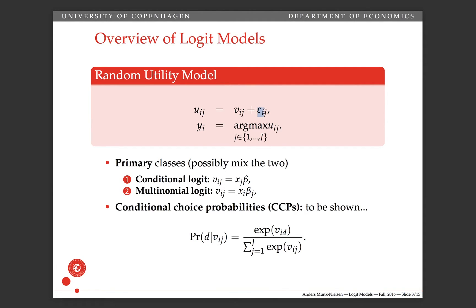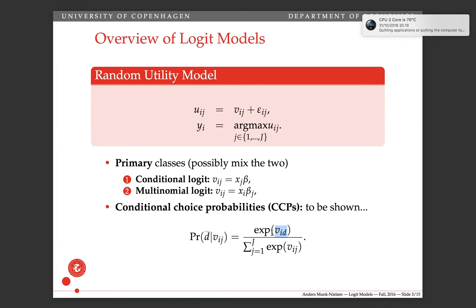When we assume epsilon is IID extreme value type 1, we can derive the probability that an individual chooses alternative d as the exponential of v_{id} divided by the sum of exponentials of v over all alternatives. The choice probabilities sum to 1 when summed over all d, which is a nice feature. The larger v_{id} is relative to all others, the larger the probability of choosing that car — in other words, higher utility means higher probability of buying it. We'll discuss in class why this particular form arises.